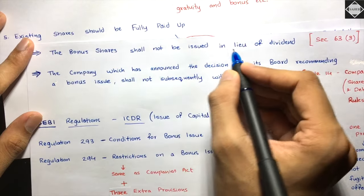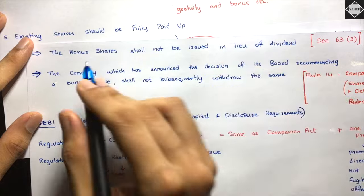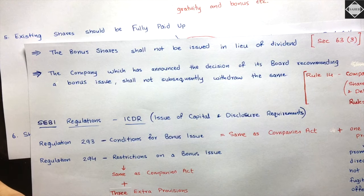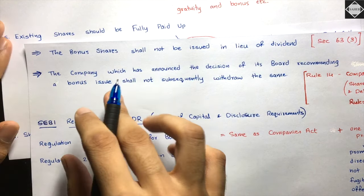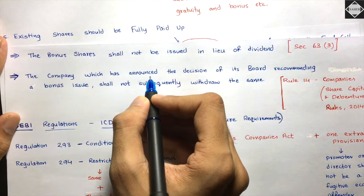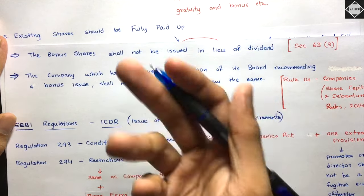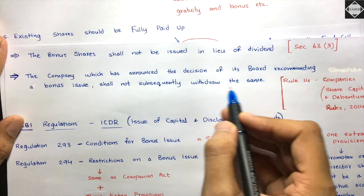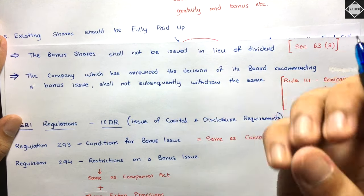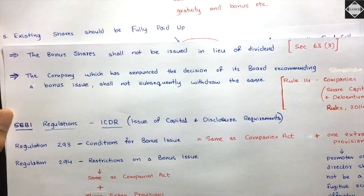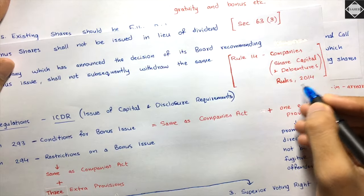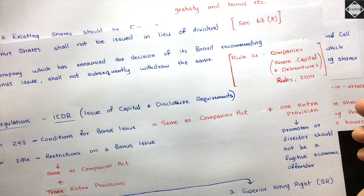Additional provisions from Section 63(3): bonus shares shall not be issued in lieu of dividend - they are not a replacement for dividend. And per Rule 14 of Companies (Share Capital and Debentures) Rules 2014: once the board announces a bonus issue, the company cannot subsequently withdraw it, as the effect has already flowed into the market.